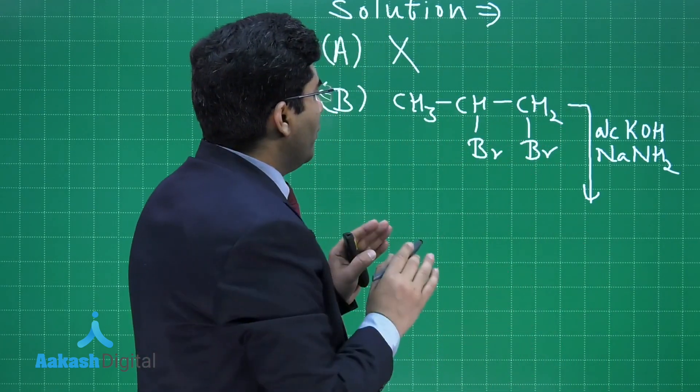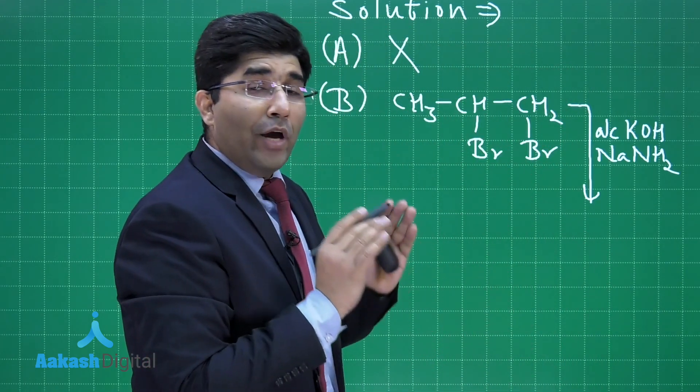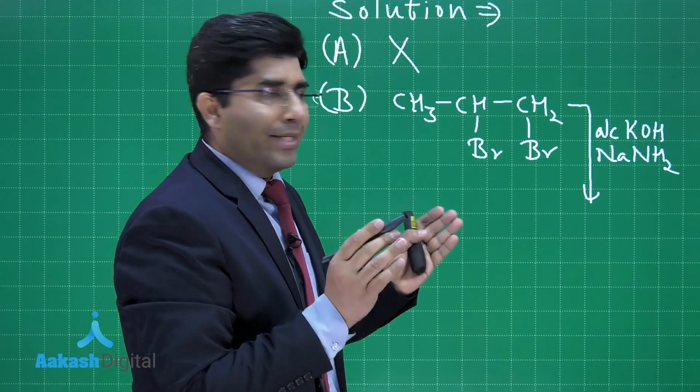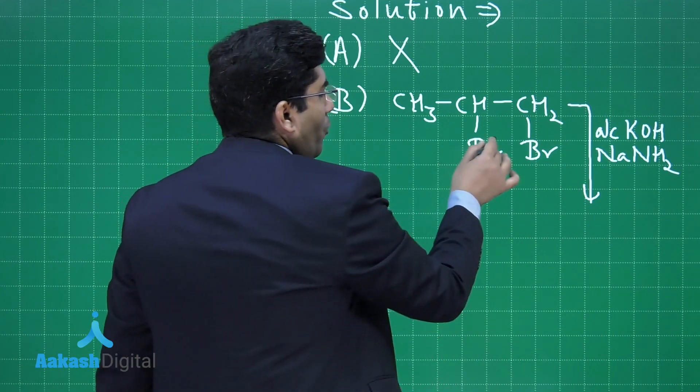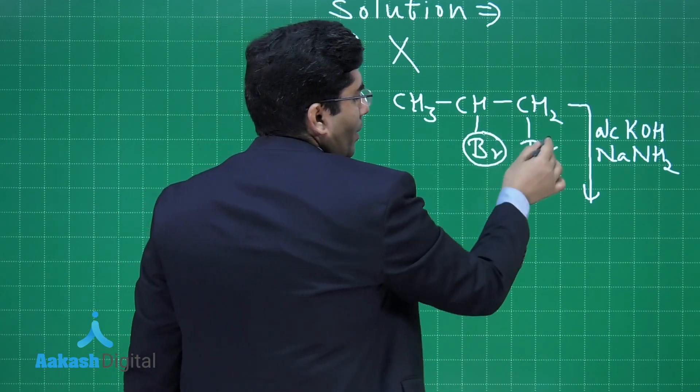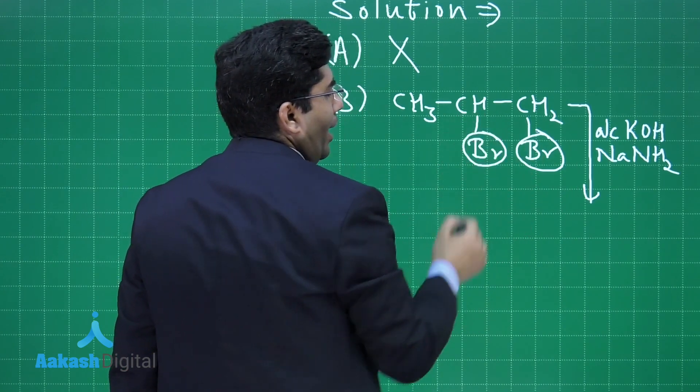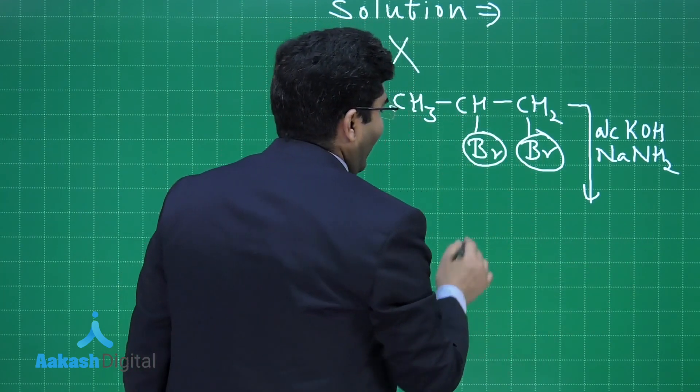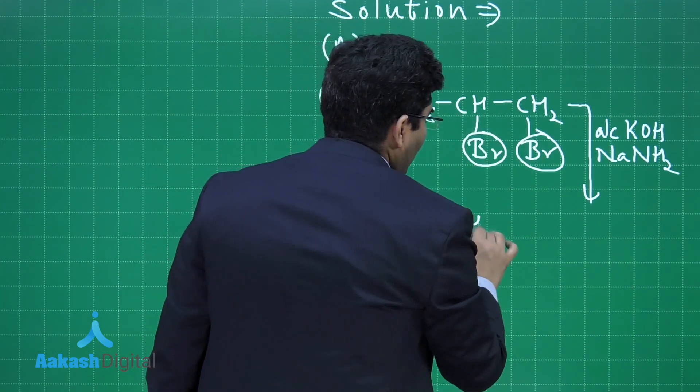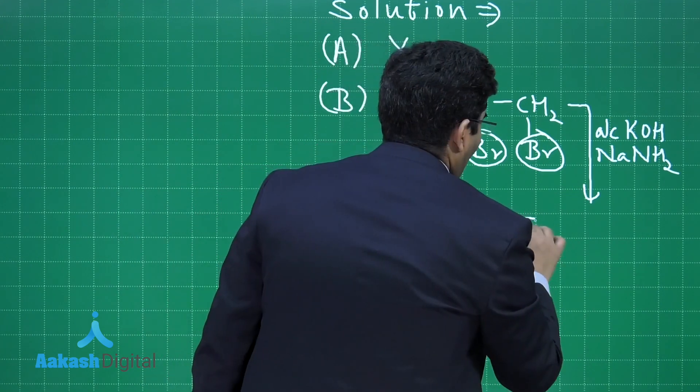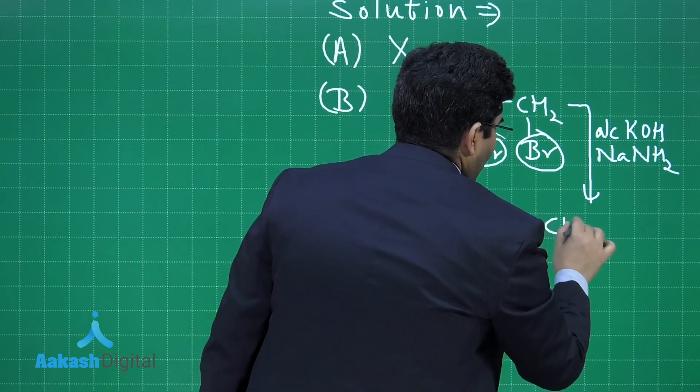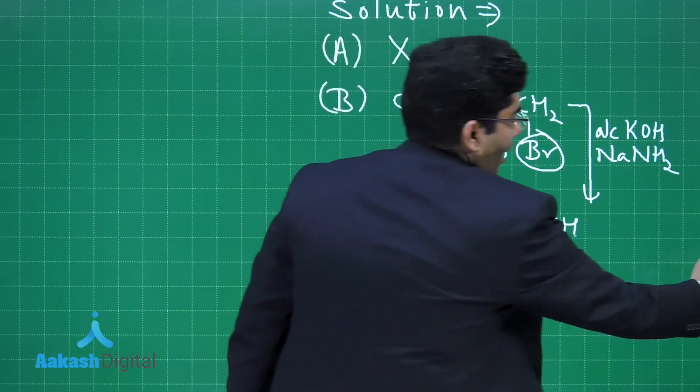Now this reaction is given in NCERT. This is the preparation of alkyne. In this case, elimination will take place. Dehydrohalogenation will take place twice. Bromine from here and hydrogen from here, and hydrogen from this carbon and then bromine from here and hydrogen from this carbon will get eliminated.